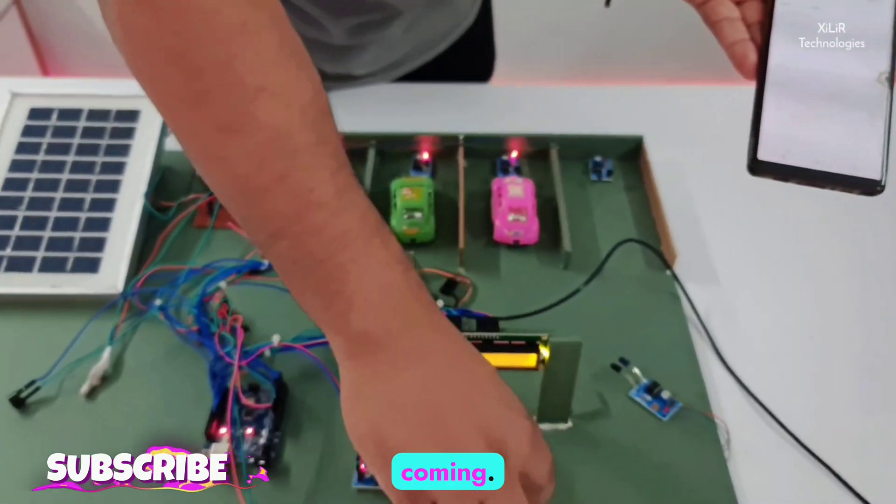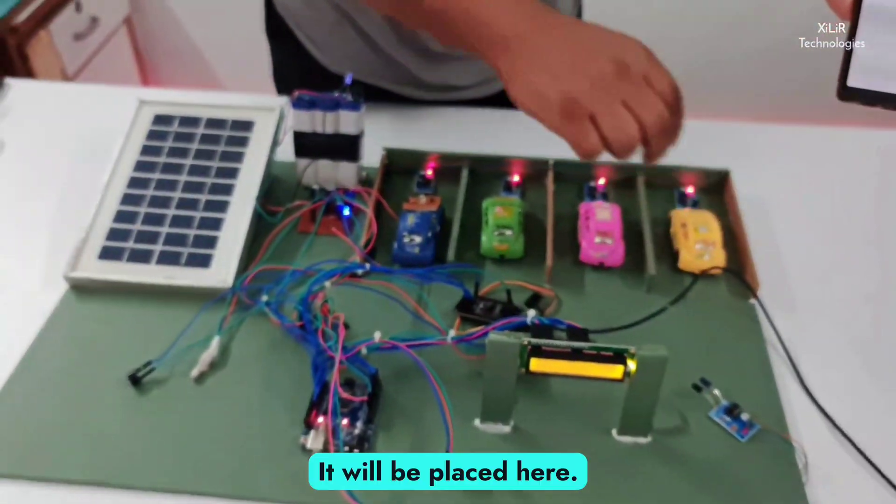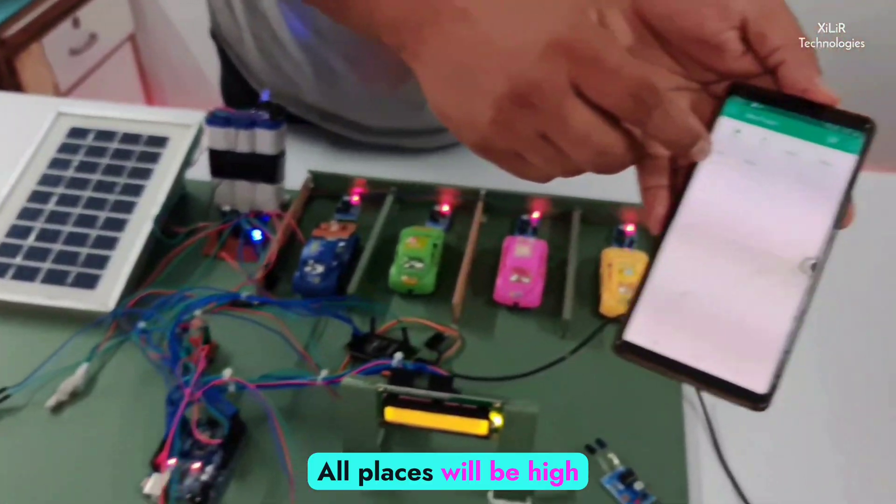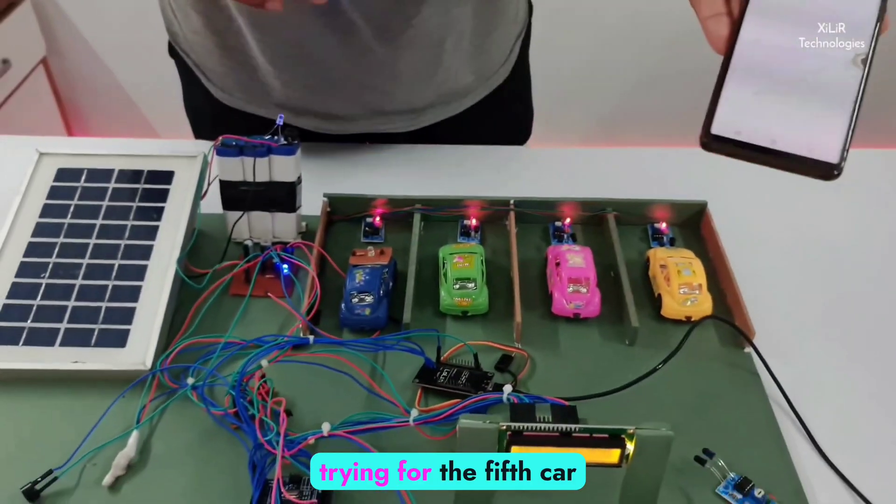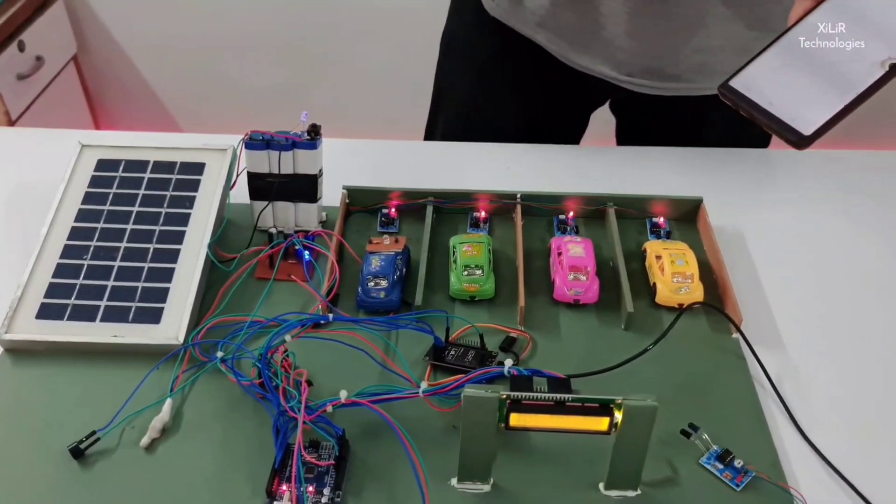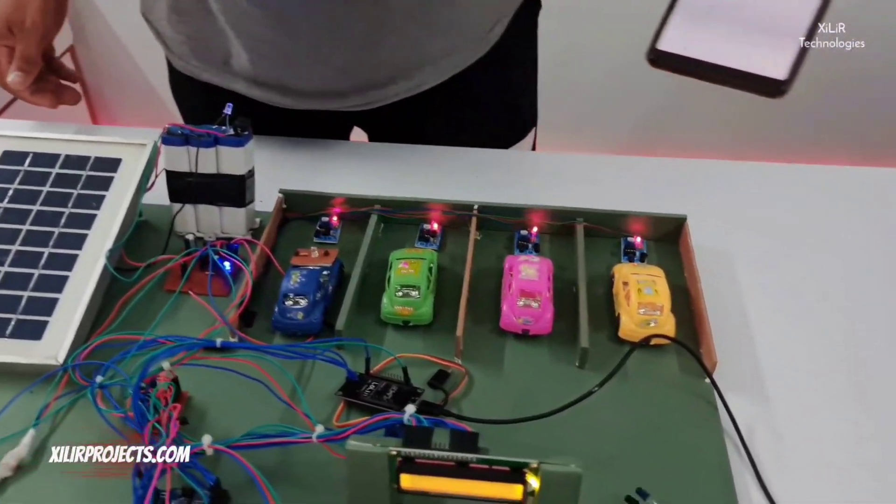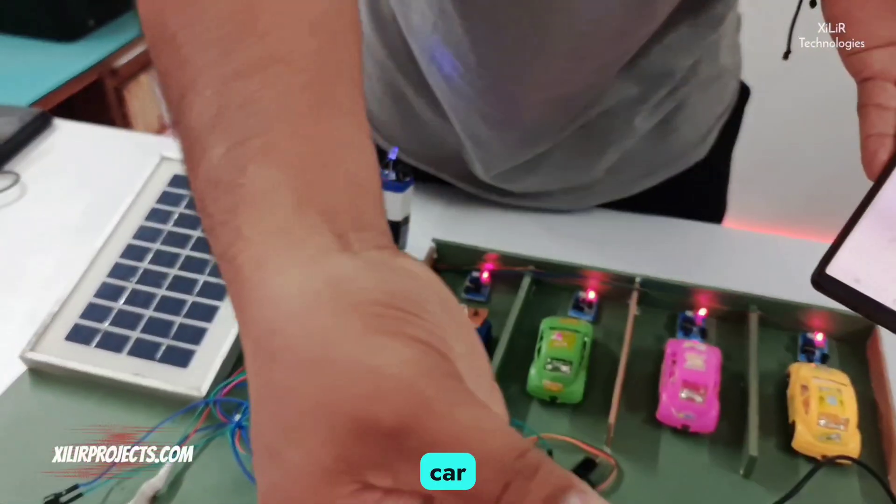Then like fourth car is coming. It will be placed here. All places will be high. And if you try to enter, like if you are trying for the fifth car, where is the fifth car? Here is the fifth car.